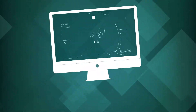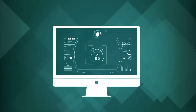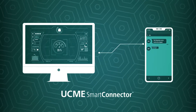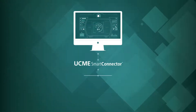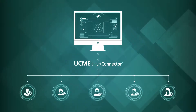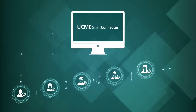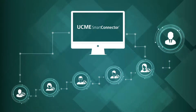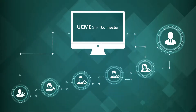When an EBO alarm starts or ends, it's immediately pushed to the UCME Smart Connector, which sends it on to the relevant field engineers where it can be acknowledged. If unacknowledged, the notification is escalated and sent onward to other recipients.